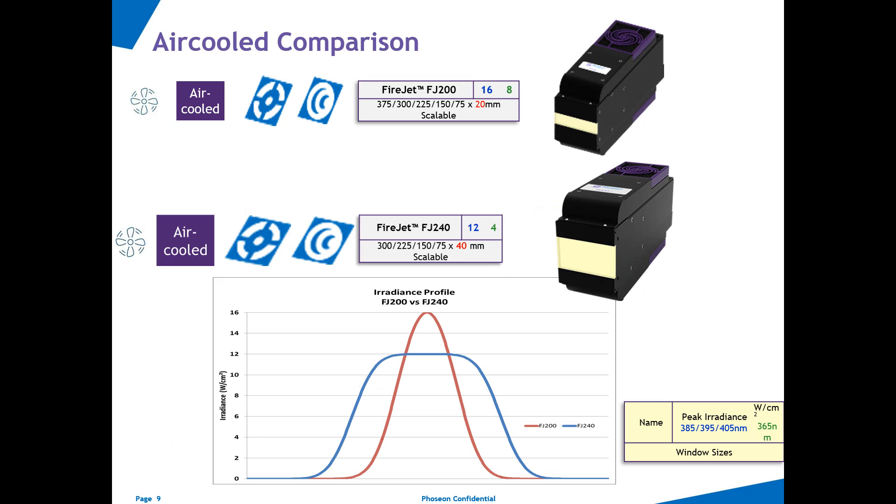By the way, Phoseon offers the same 40 millimeter wide windows for air-cooled lamps as well, with the FJ240 shown here in the middle. While the well-known FJ200 with a 20 millimeter wide window offers higher peak irradiance ratings than the FJ240, the FJ240 clearly dominates in terms of dose, as you can see on the below graph.